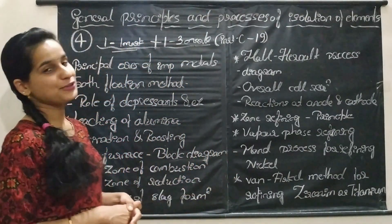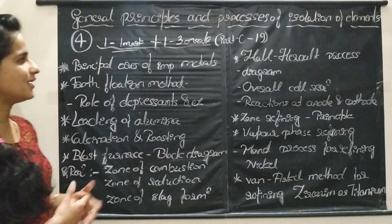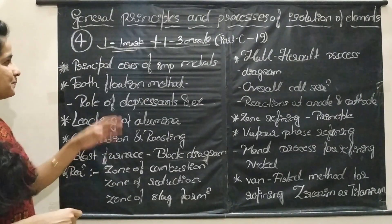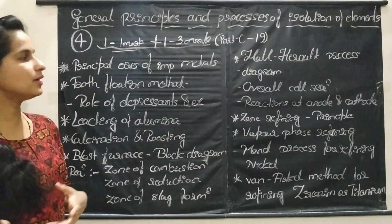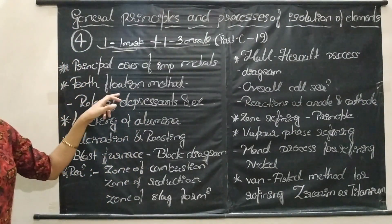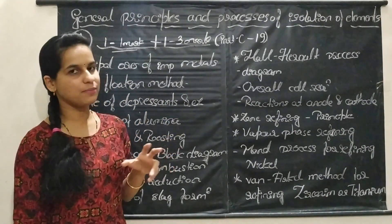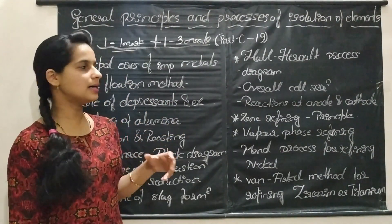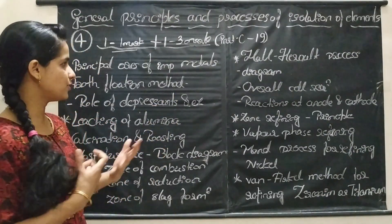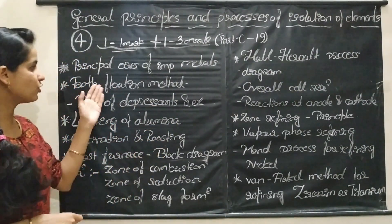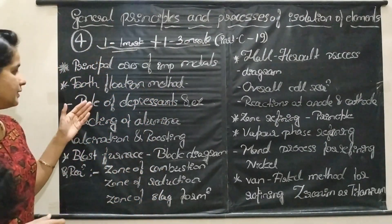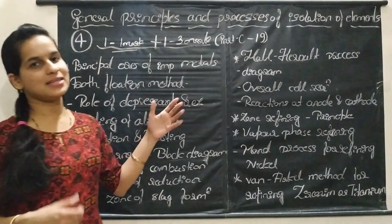Please study this chapter thoroughly. Let us consider the important topics. You have to remember some important ores of some metals. Then, froth flotation method — this method is important because sometimes a one-mark question will be asked, such as for which type of ores this froth flotation method is used, or what is the role of depressants.